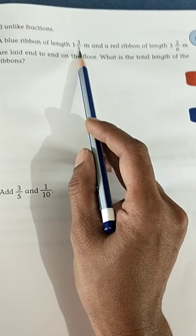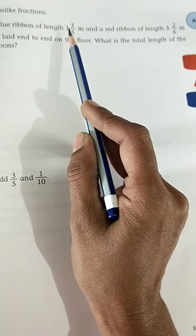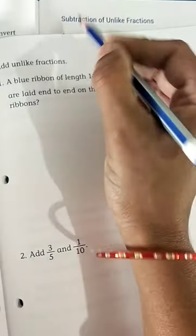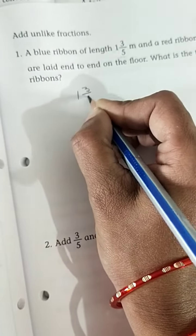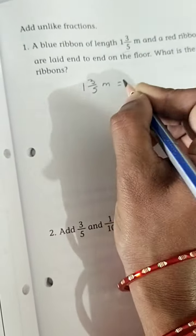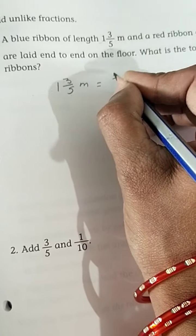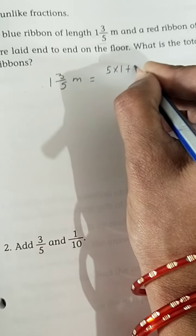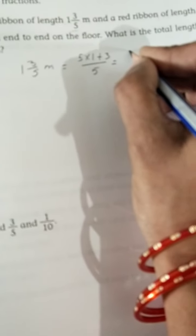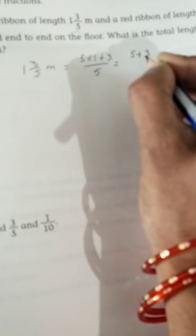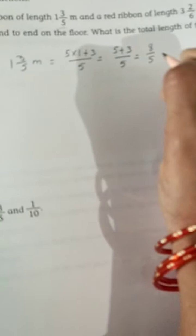How to convert a mixed fraction to an improper fraction? For 1 and 3/5: multiply 5 × 1, then add 3, over 5. That is (5 × 1 + 3)/5 = 8/5.